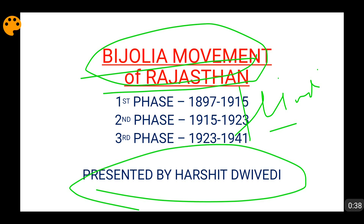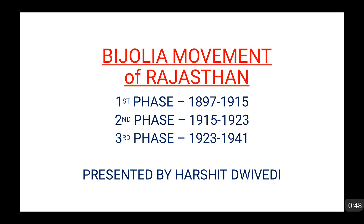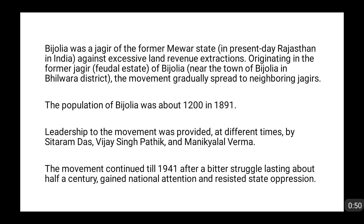The first phase of the Bijouliya movement was from 1897 to 1915, the second phase from 1915 to 1923, and the third phase from 1923 to 1941. So it was spread in three phases. Bijouliya was basically a Jagir of the former Mewad state, which is in present-day Rajasthan in India.